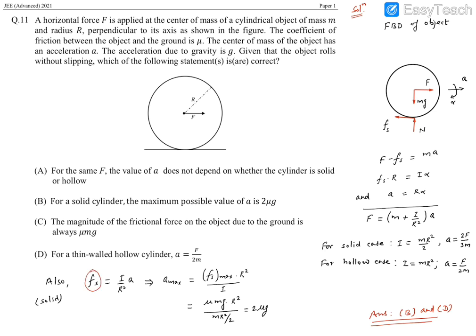From that, f_static is I/R² times a. Static friction is self-adjusting, depending on force F. But for a particular value of F, it can reach its max value. When this f_s reaches its max value, a reaches its max value.